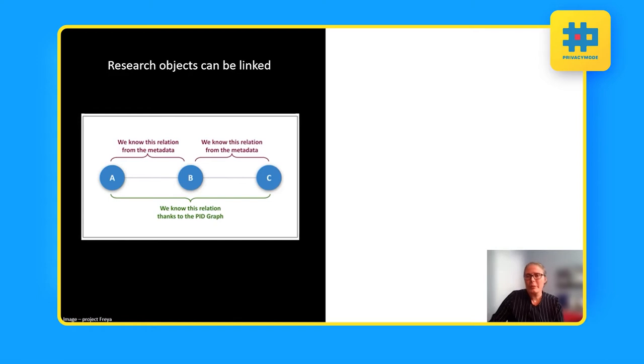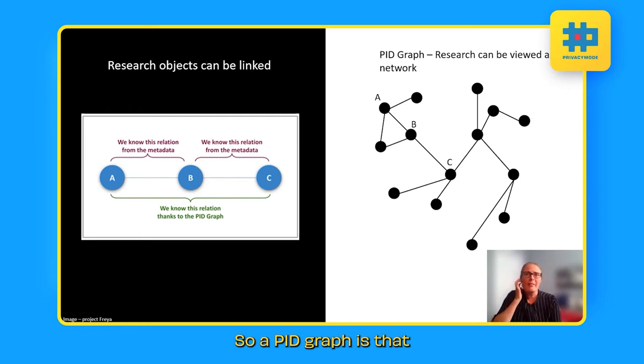When we're able to identify these research objects, we can link them together via the metadata. So in this figure example here from Project Freya, we know that A and B are related and B and C are related. And therefore, we can assert the relationship between A and C because of something that we call in research the PID graph.